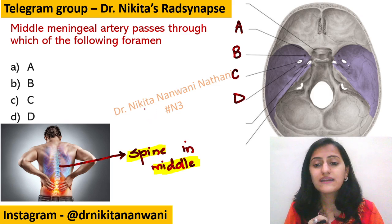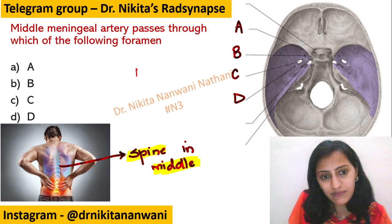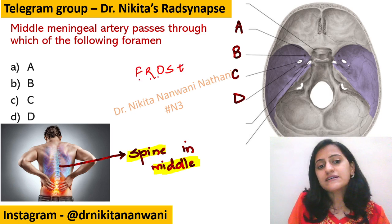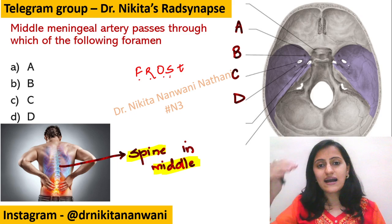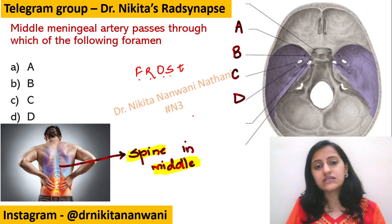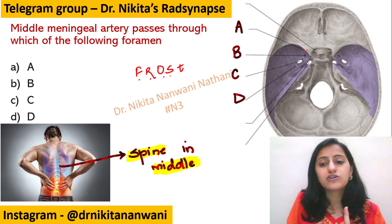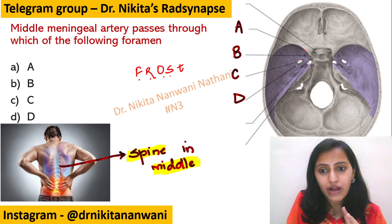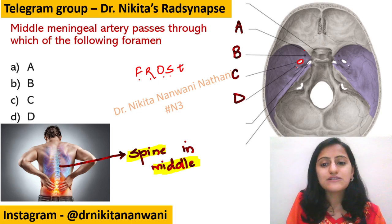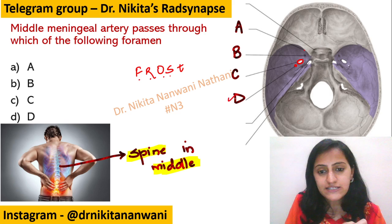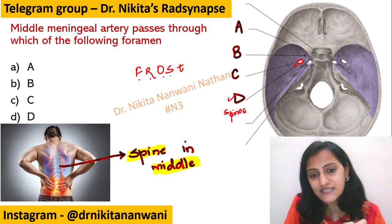Now which one is foramen spinosum? The mnemonic to remember is like 'FROS' — think of frostbite: F, R, O, S. Anterior to posterior, the foramina in the greater wing are: F — the first one in front, the superior orbital fissure; R — foramen rotundum; O — foramen ovale, the oval-shaped bigger foramen; and S — foramen spinosum. So D is your foramen spinosum.